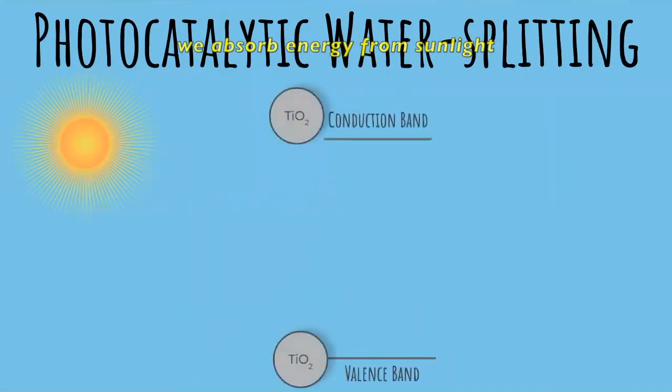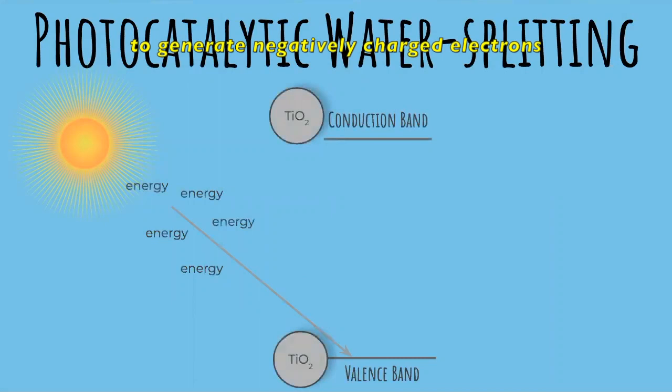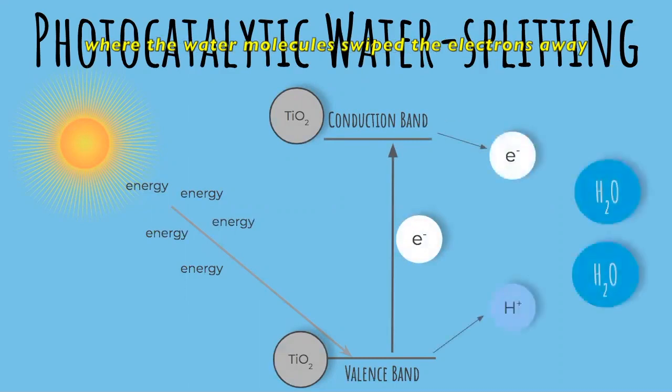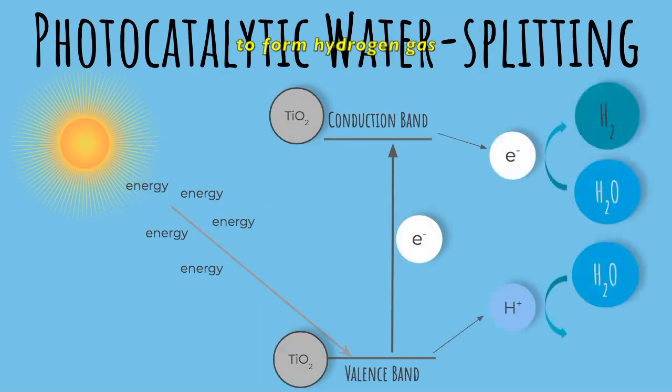we absorb energy from sunlight to generate negatively charged electrons and positively charged holes that the electrons have left behind. These deliver charges to water where the water molecules swipe the electrons away to form hydrogen gas and the holes strip the molecules of electrons to form oxygen gas.